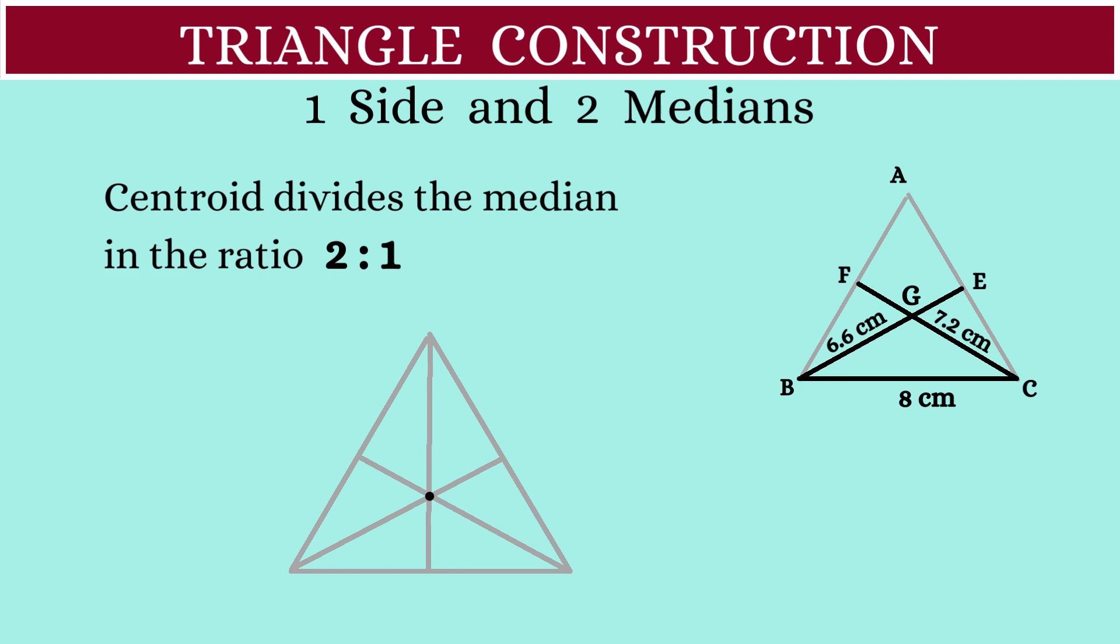Since BE is 6.6 centimeters, BG will be 4.4 centimeters and GE will be 2.2 centimeters.